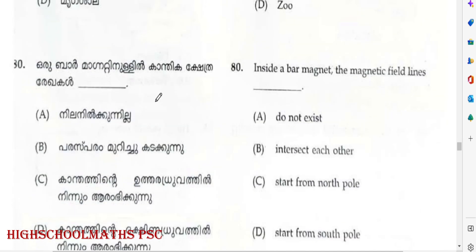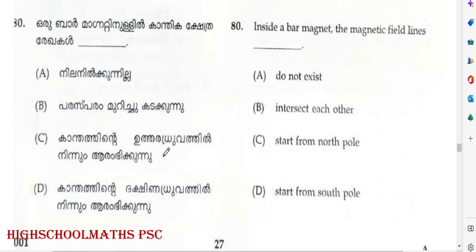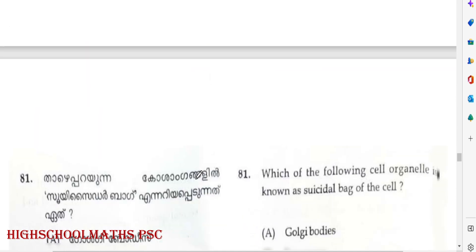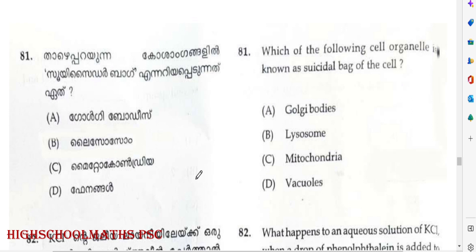Question: Inside a Bar Magnet, the magnetic field lines go from South to North. The organelle known as the suicidal bag of the cell — options are Lysosome, Mitochondria, Phenomal. Answer: Option B — Lysosome.